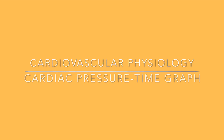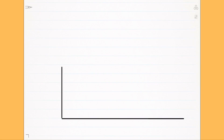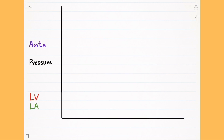Hey everyone, welcome to Grab the MD. In the previous video we talked about pressure and volume changes in the left ventricle during a cardiac cycle. Let's see how the pressure inside the left atrium and aorta changes compared to the left ventricle as the cardiac cycle progresses through time.